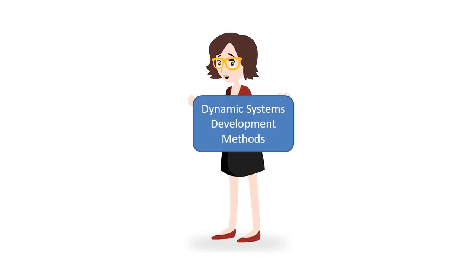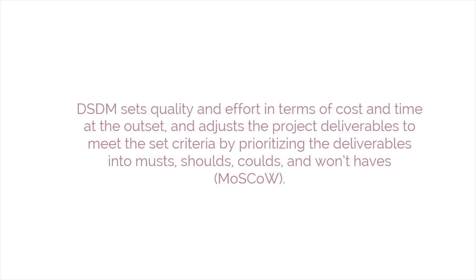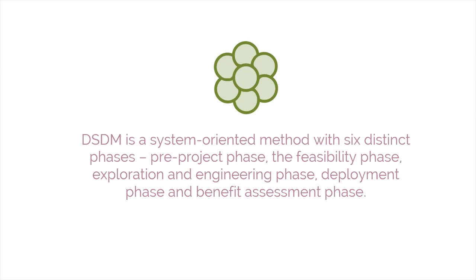The fourth method is Dynamic Systems Development Method. DSDM sets quality and effort in terms of cost and time at the outset and adjusts the project deliverables to meet the set criteria by prioritizing them into musts, shoulds, coulds, and won't-haves — or MoSCoW. DSDM is a system-oriented method with six distinct phases: pre-project phase, feasibility phase, exploration and engineering phase, deployment phase, and benefit assessment phase.